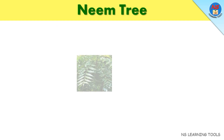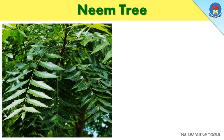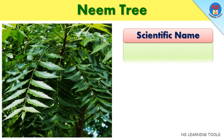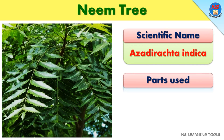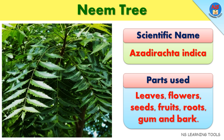Neem tree. Scientific name: Azadiric de indica. Parts used: Leaves, flowers, seeds, fruits, roots, gum, and bark.